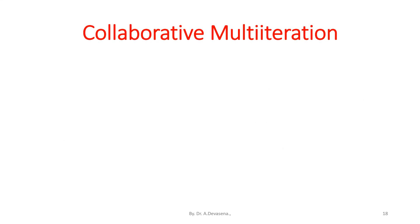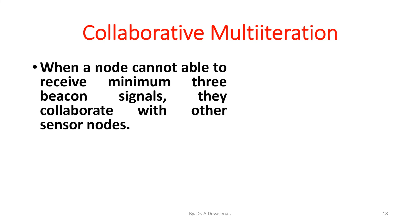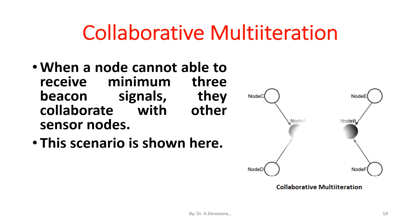In Collaborative multilateration, when a node cannot receive a minimum of three beacon signals, it collaborates with other sensor nodes. In this diagram, sensor nodes A and B collaborate with each other to determine their positions.